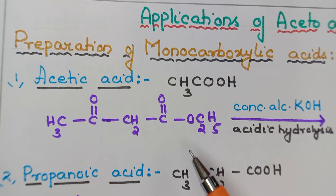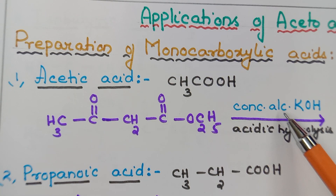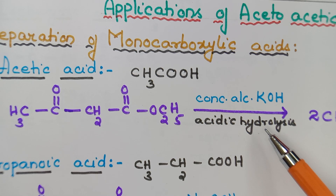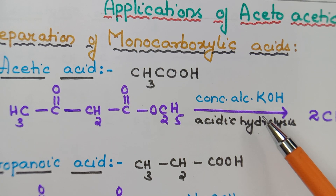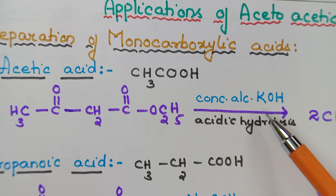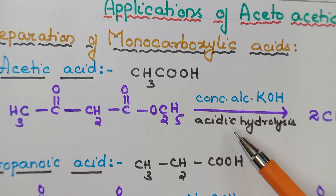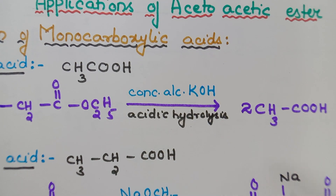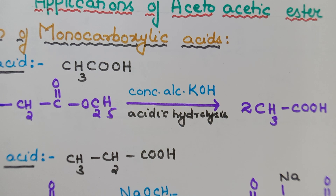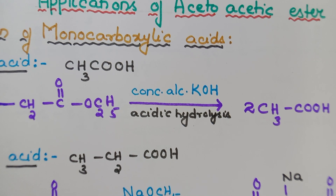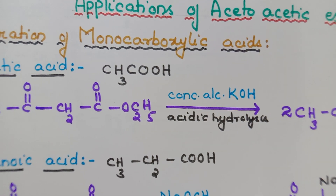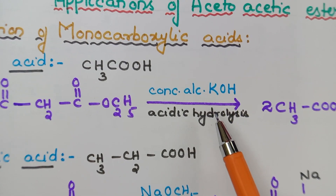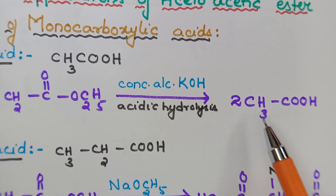This is the easiest reaction. How is acetic acid prepared? Put an arrow — when acetoacetic ester is treated with concentrated alcoholic KOH, we call this acetic hydrolysis because hydrolysis takes place in the presence of concentrated alcoholic KOH, producing monocarboxylic acids. We are getting two molecules of acetic acid: 2 CH₃COOH.